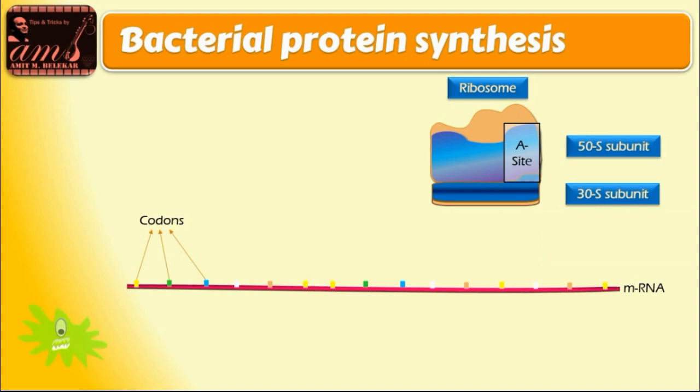Second site is P site where actual transfer of amino acid takes place from one tRNA to other tRNA. Transferred amino acid joins together by peptide linkage. Third site is called E site, also called exit site, from which tRNA leaves the ribosome.